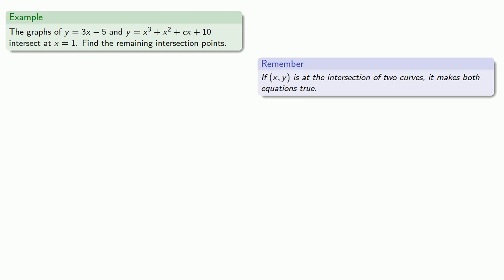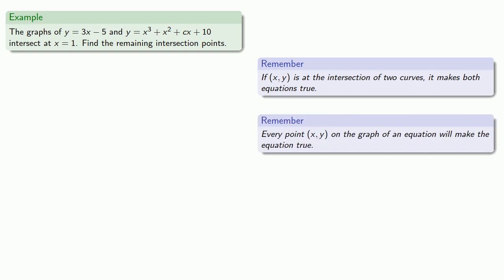And since we know x and we don't have y, what can we do now? Well, remember, every point (x, y) on the graph of an equation will make the equation true. So x equals 1 does correspond to a point on the graph of y equals 3x minus 5.